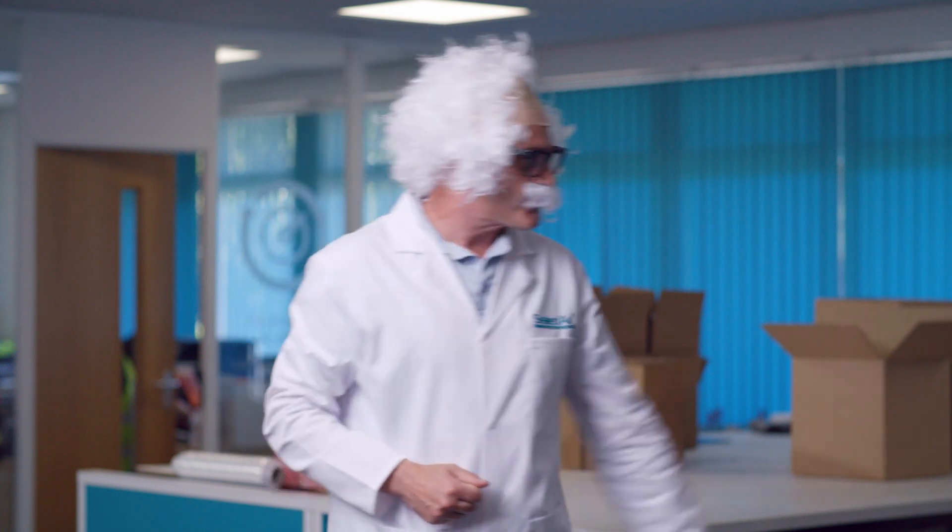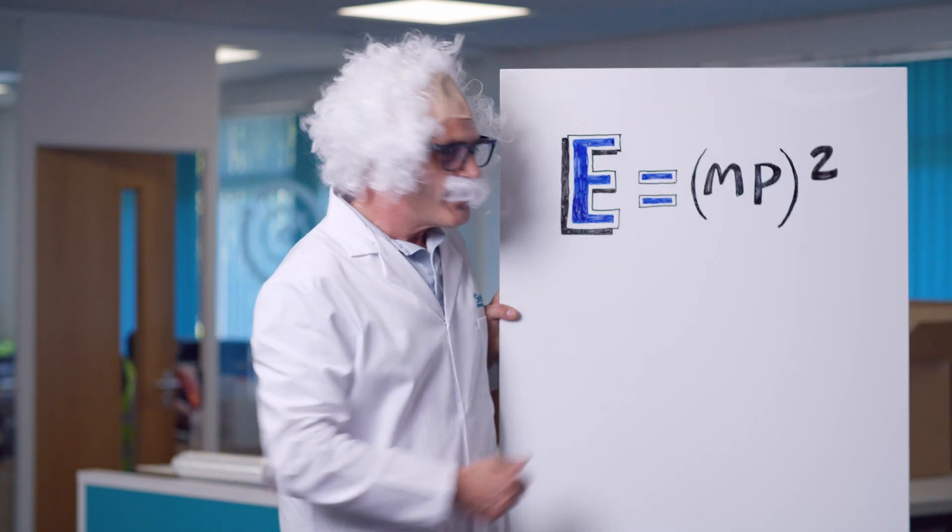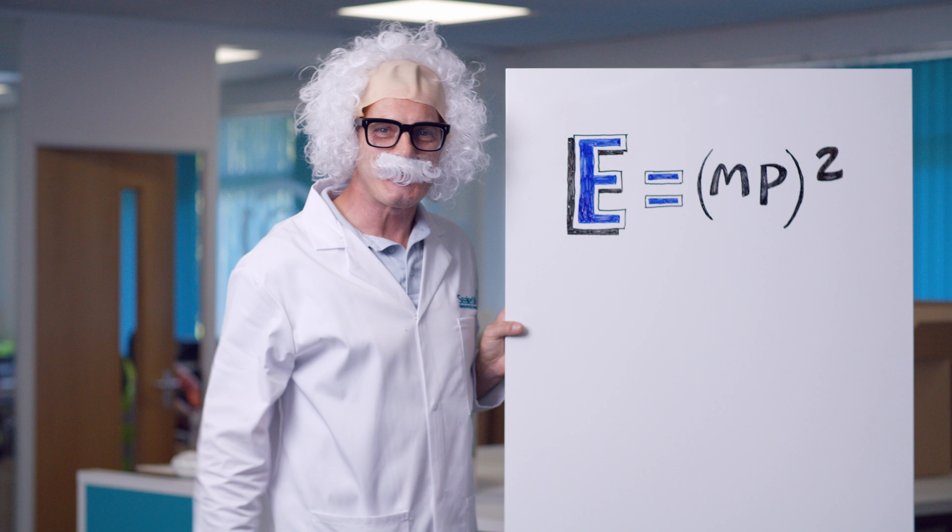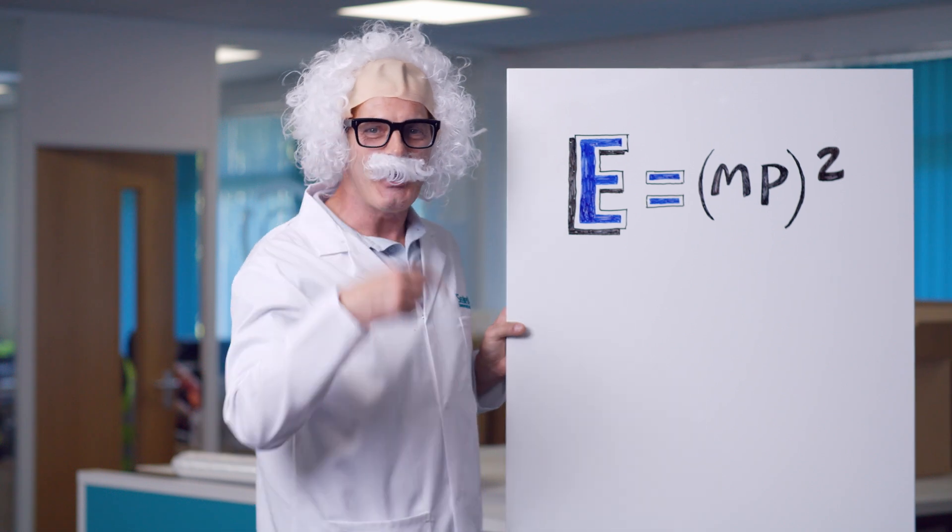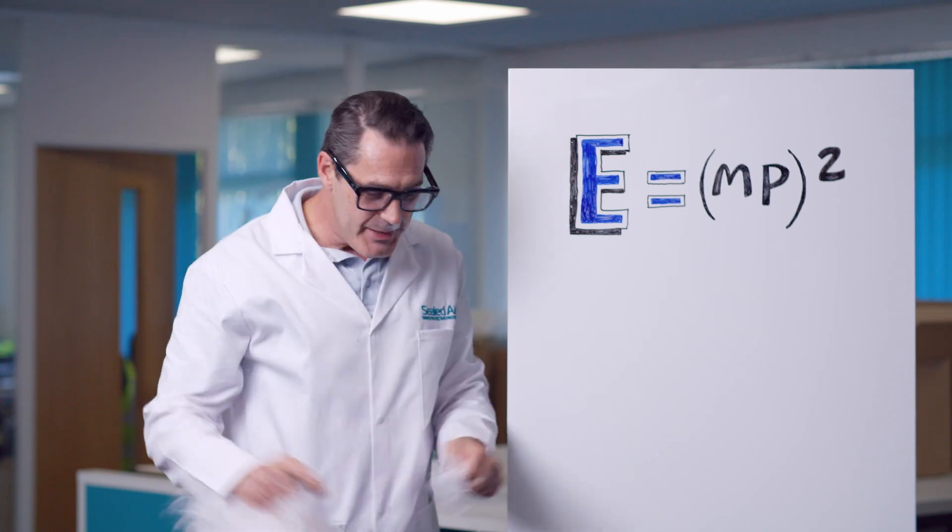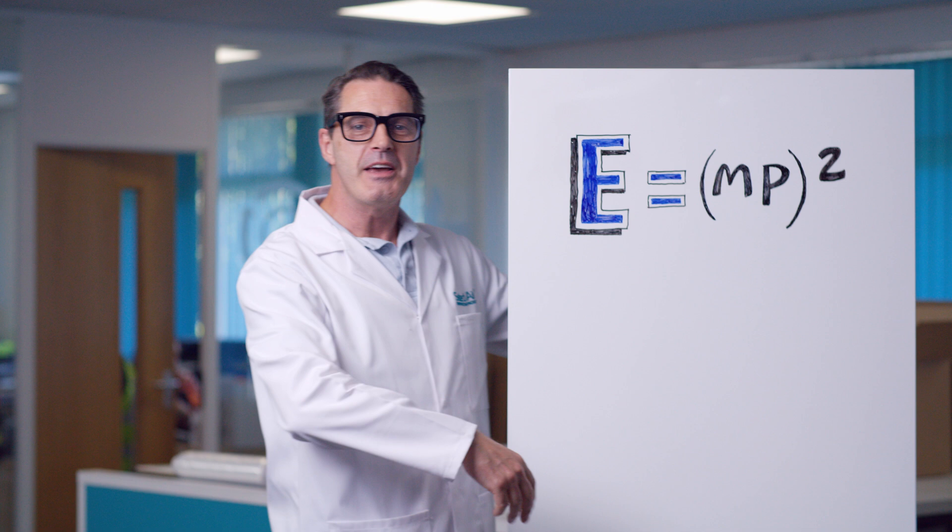That formula is E equals MP squared. I know, very Einstein-esque, hence the wig and moustache. You know, too much? Okay. I did tell Mrs. P it was a little bit silly, but allow me to explain this theory.